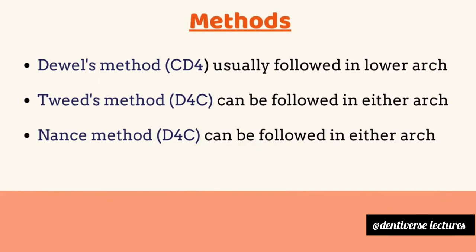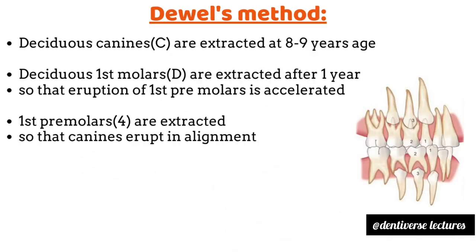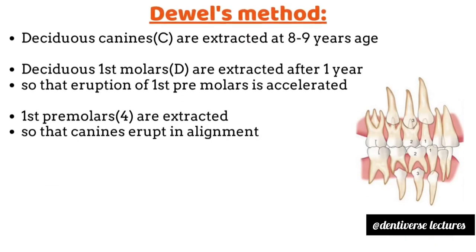Methods of serial extraction are: the Dewey-Will method, usually used in the lower arch; the Tweed and Nance methods, which can be used in either arch. In Dewey-Will's method — a three-step method — the first step is to extract the deciduous canine at eight to nine years of age.